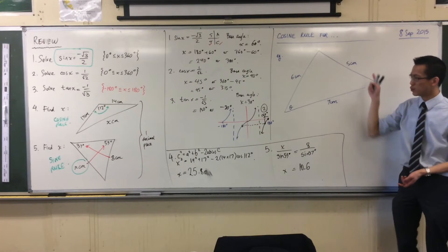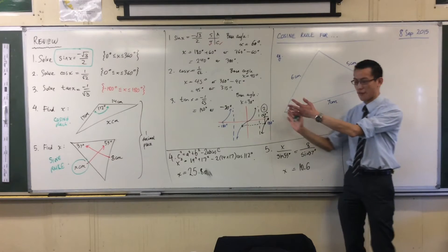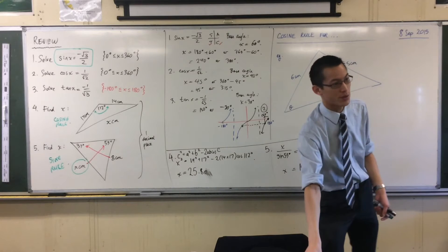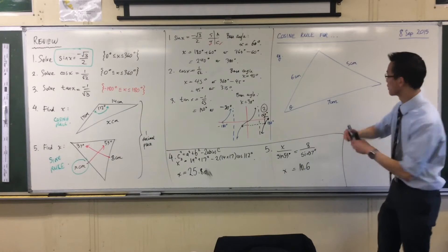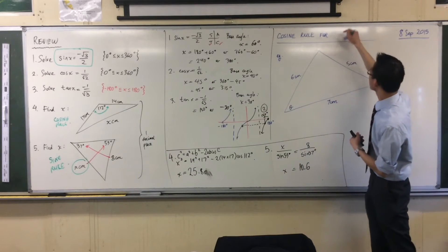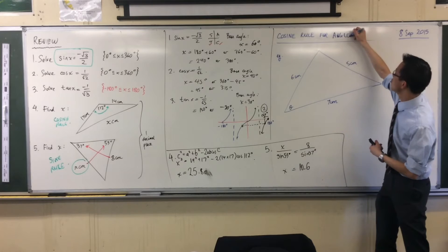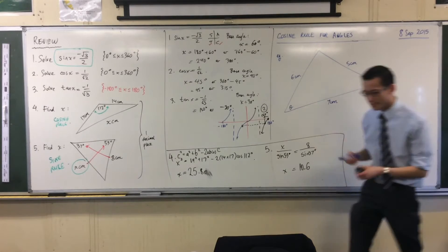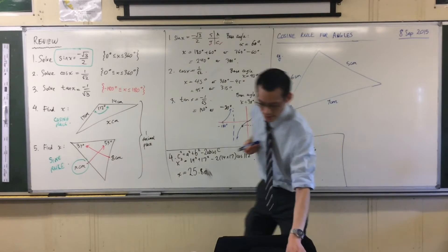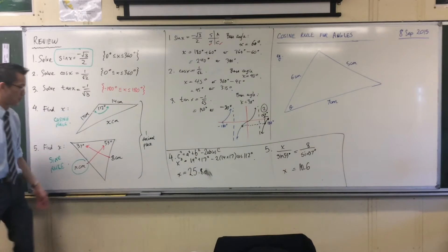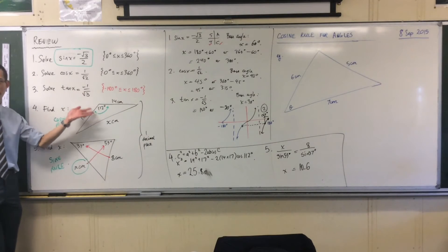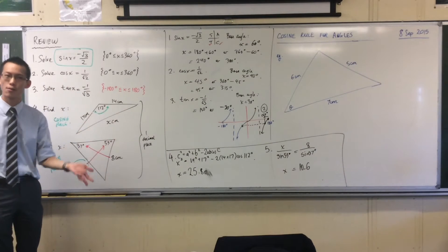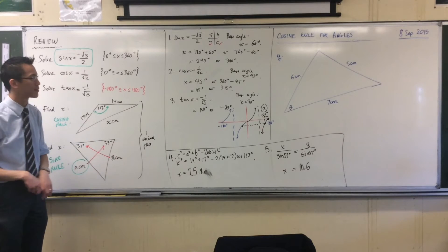We've been using the cosine rule for finding lengths. We're now going to move forward and use it for finding angles. So if you haven't copied this new blue diagram down, please do so. Just like the sine rule can be used for lengths and for angles, I can use the cosine rule for both sides of the equation.